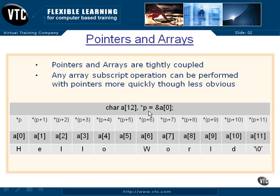Now we could have just as easily said in this definition that P is equal to A, and left off the address of sub 0, because that's what A is. When we create an array, A references the address of element 0 — the zeroth element, the first element. After this statement is performed, these are equivalent.